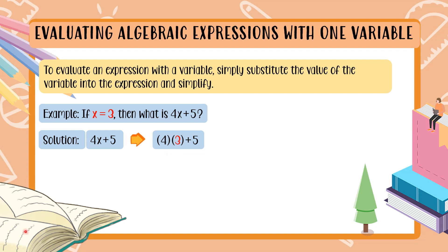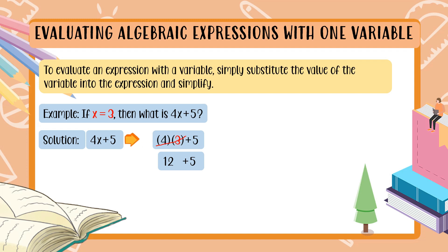We solve using GEMDAS. Since there are no groupings and no exponents, let us go to MD — multiplication and division. There is only multiplication: 4 times 3. That is what we solve first. 4 times 3 is equal to 12. Then bring down plus 5. We are done with MD, so now we go to addition: 12 plus 5 equals 17. So when x is equal to 3, 4x plus 5 is equal to 17.